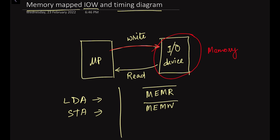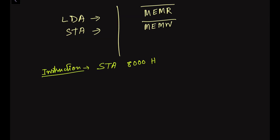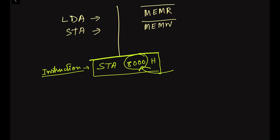In this video we consider the memory mapped input output write instruction, where 8-bit data is transferred from the microprocessor unit to the input output device. The example instruction is STA 8000H, where H represents hexadecimal. The meaning of this instruction is: store the content of the accumulator in memory location 8000H, which in memory mapped I/O represents the address of the input output device.